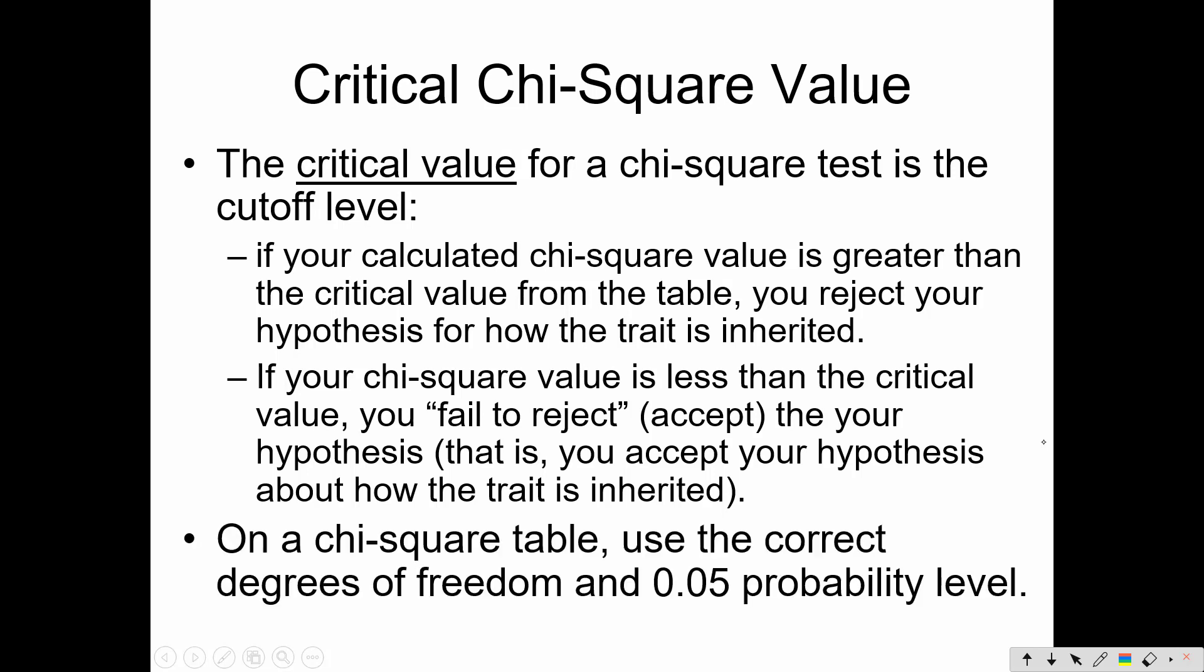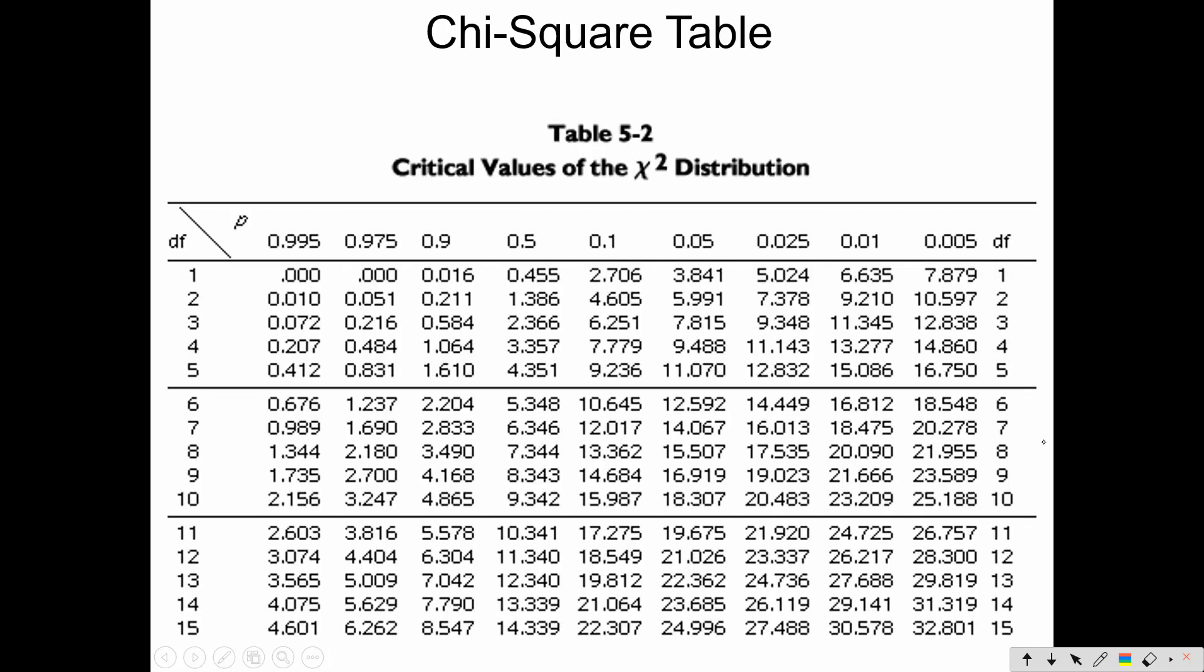Now, on the chi-square table, you have to use the correct degrees of freedom and the probability level that you decided that you were confident in. So we're going to use the .05 probability level. So here's our chi-square table. For our example, we had two types of offspring. So we would use the one degree of freedom row, and we're going to use the .05 probability for our confidence. So our critical number that we're looking at is 3.841.